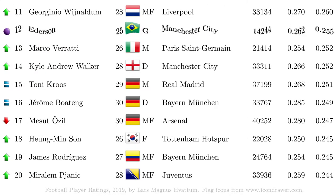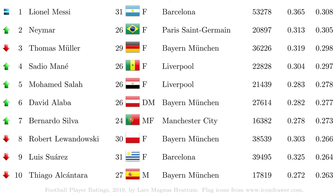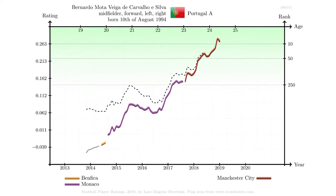The Brazilian goalkeeper Ederson is not only the highest placed goalkeeper, but also the highest placed newcomer on the list. He only has 14,000 minutes of playing time recorded in the dataset, which helps to explain how his rating can increase so fast. Another player with relatively few minutes played in the dataset is Bernardo Silva. Currently number seven, he has climbed 59 positions since the previous list. His rapid climb is also explained by the fact that he is the youngest player in the top 25 — at age 24, he is expected to still improve his rating.